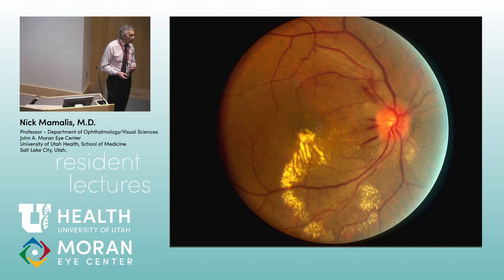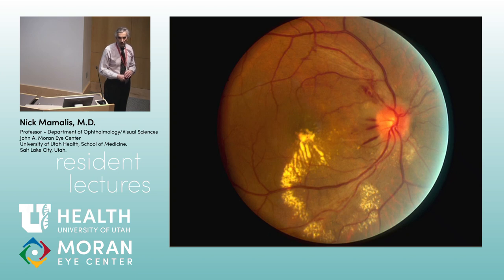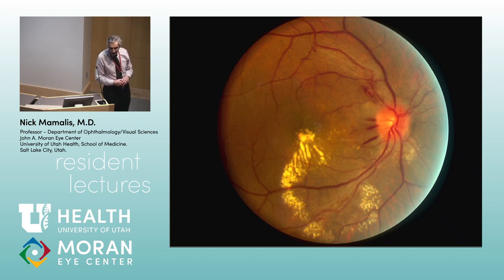What else can happen with hypertensive retinopathy? In this image there are hard exudates and flame-shaped hemorrhages coming off the disc. Why are the exudates in a star shape? Not because they're in the nerve fiber layer — they're actually deeper in Henley's layer. Just like the flower petal pattern in cystoid macular edema, the star shape indicates we're in the macula.